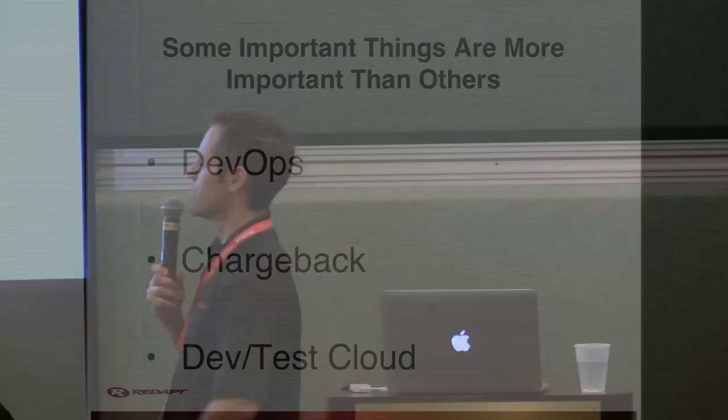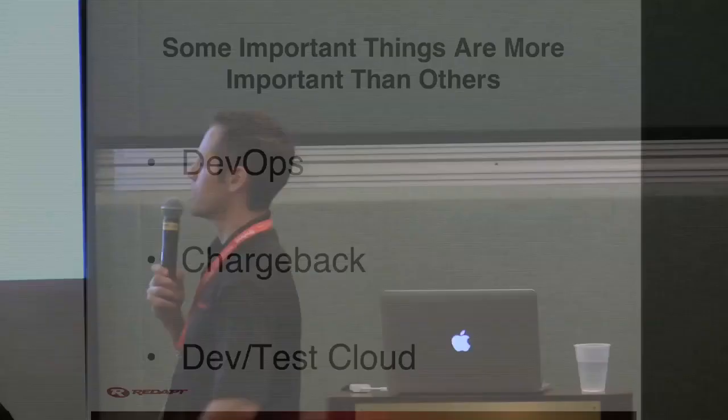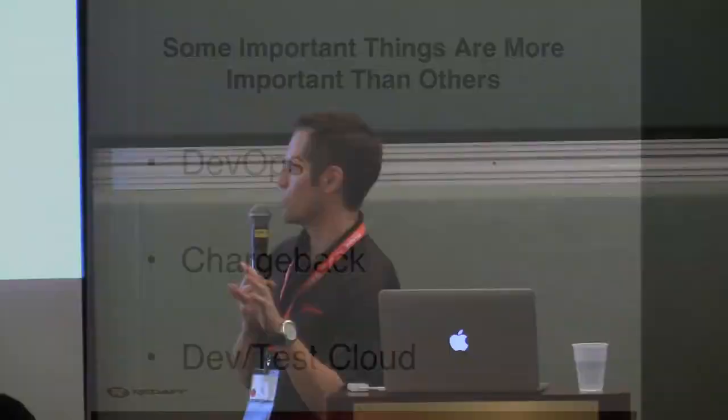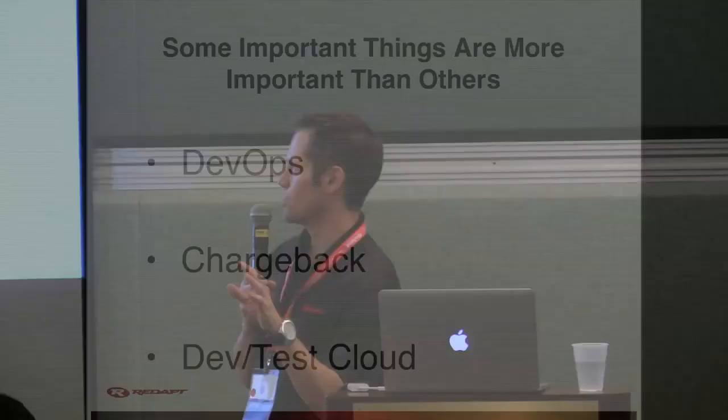Of the list I just presented, the most important items are the ones we hear most from customers. Some customers say the public cloud is interesting and they want fully elastic demand. But other customers say they don't want the public cloud because of security constraints or other reasons. Many want a private cloud or a hybrid cloud because of three things: DevOps, chargeback, or building out dev and test clouds.